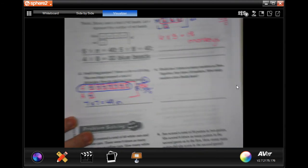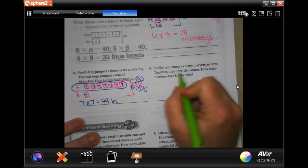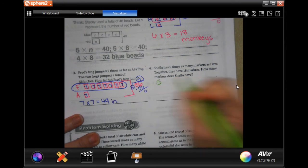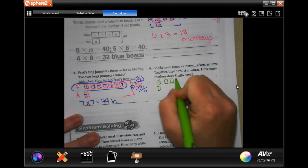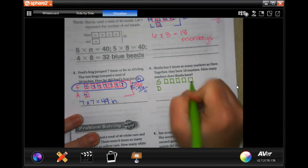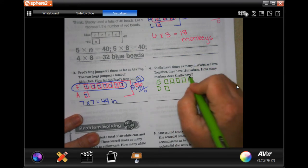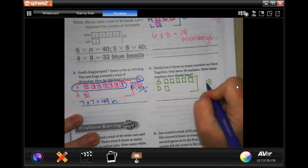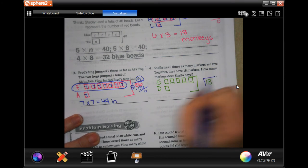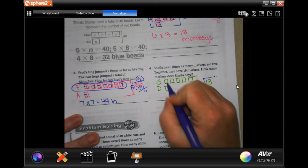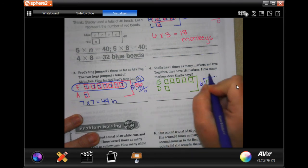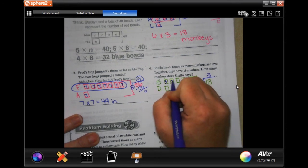Sheila has five times as many markers as Dave. So Sheila, Dave. Sheila has five times as many as Dave. Together they have 18 markers. That means that in order to find out how much each box is worth, I'm going to divide this 18 by the number of boxes. There's one, two, three, four, five, six boxes and six times three is 18.